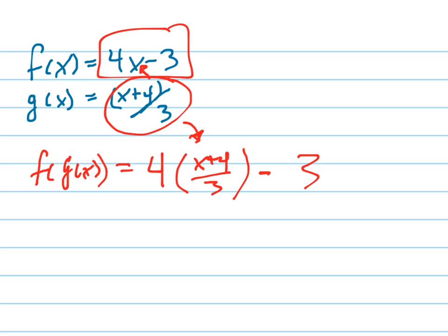All right, now this is a little complicated because I'm going to have to be careful with my algebra. I'm going to distribute this 4 into the top here. So that's 4x plus 16 all over 3 minus 3.